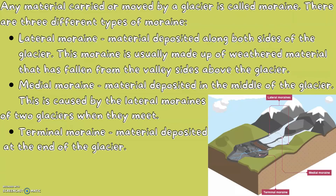Any material carried or moved by a glacier is called moraine. There are three different types: lateral moraine, when material is deposited along both sides of the glacier; medial moraine, when material is deposited in the middle of the glacier; and terminal moraine, when material is deposited at the end of a glacier.